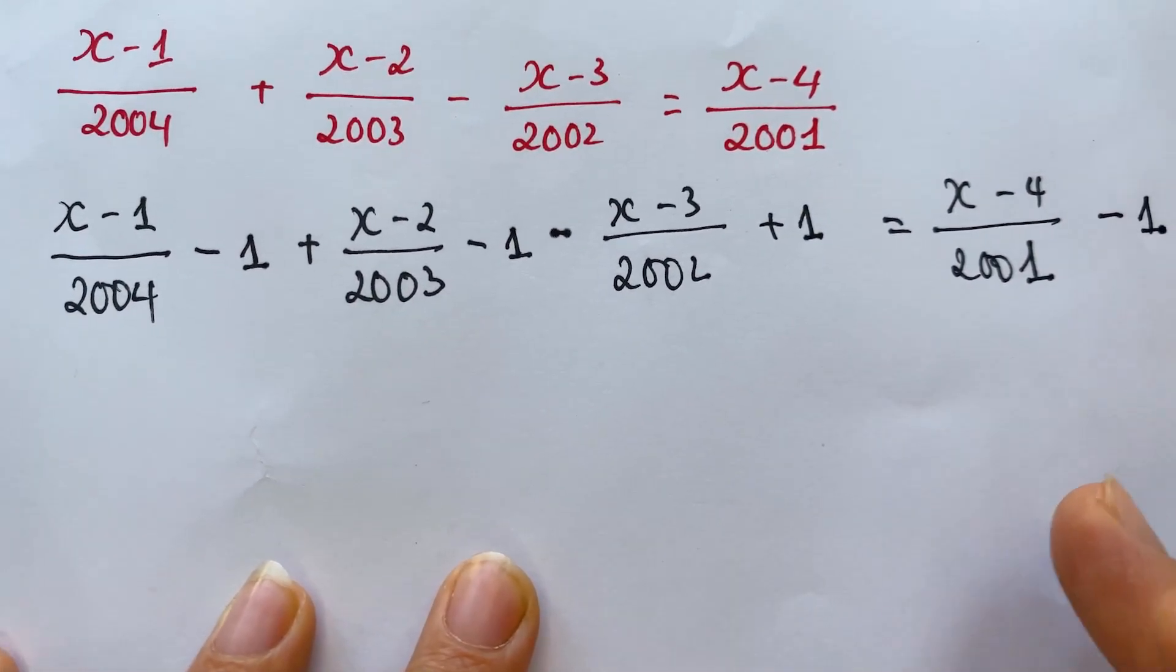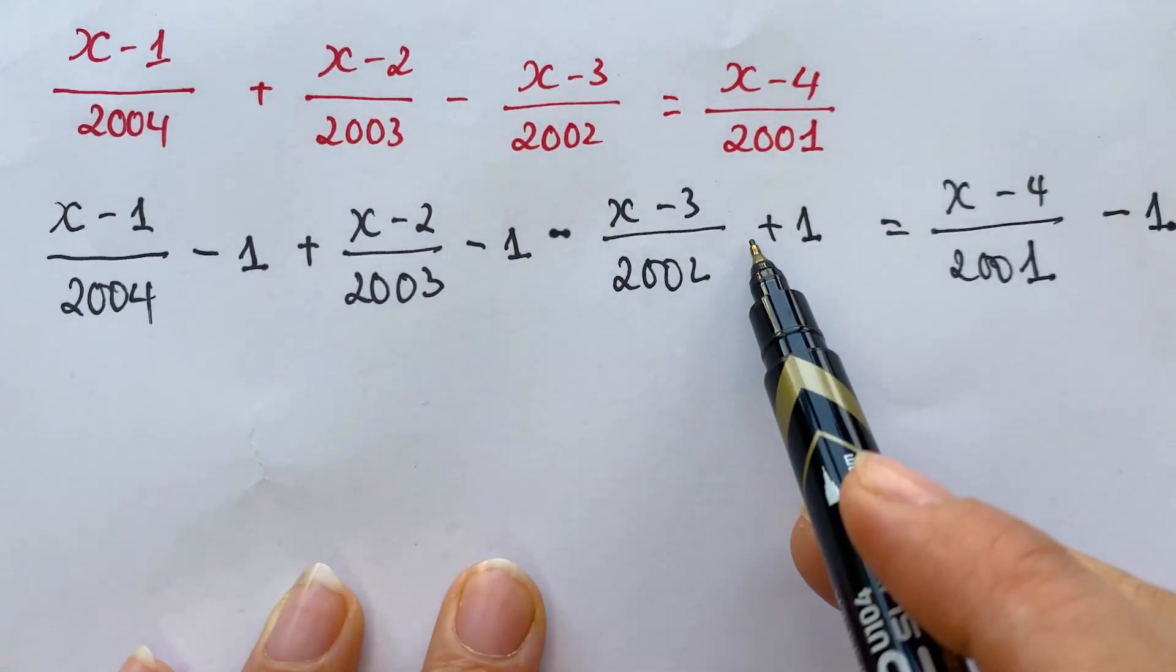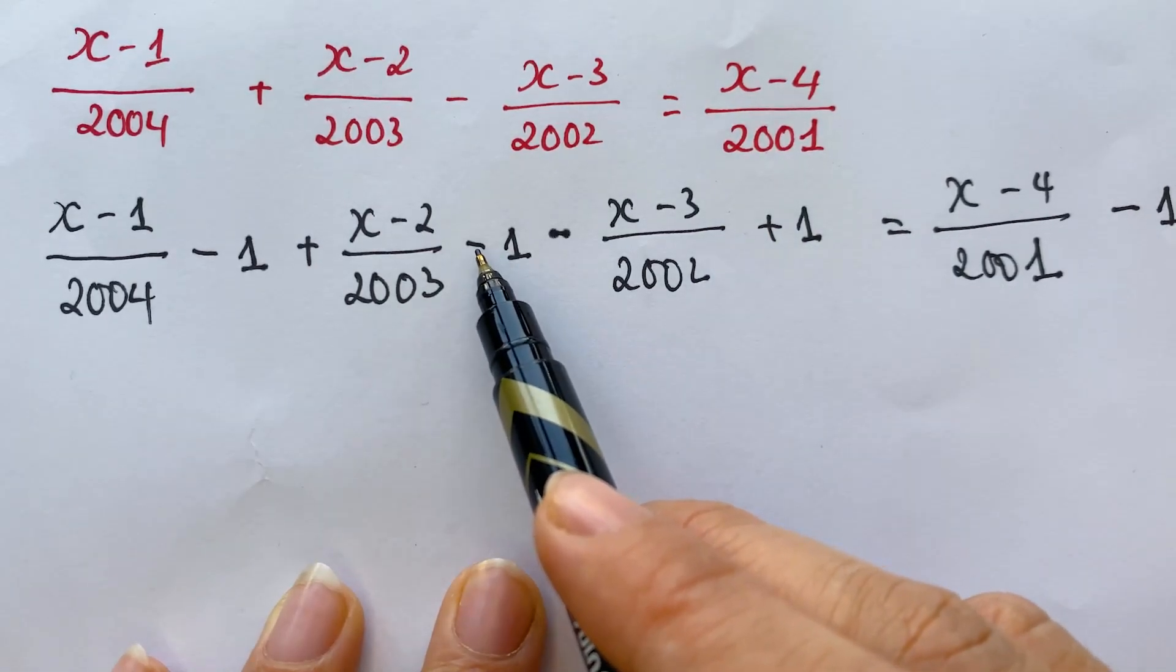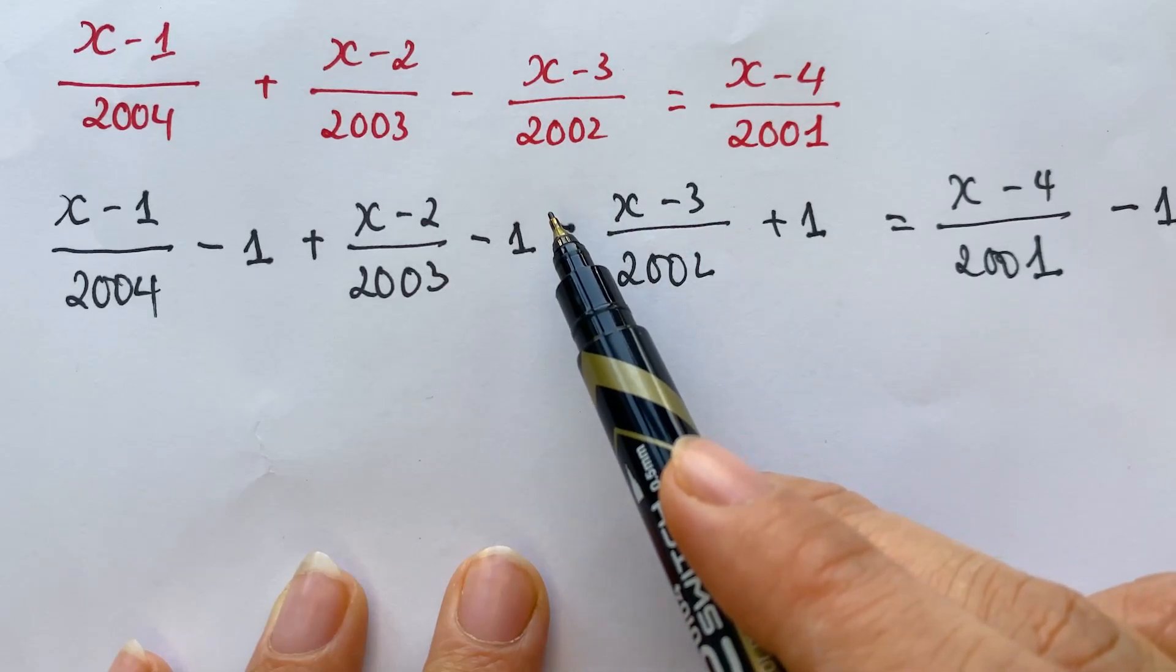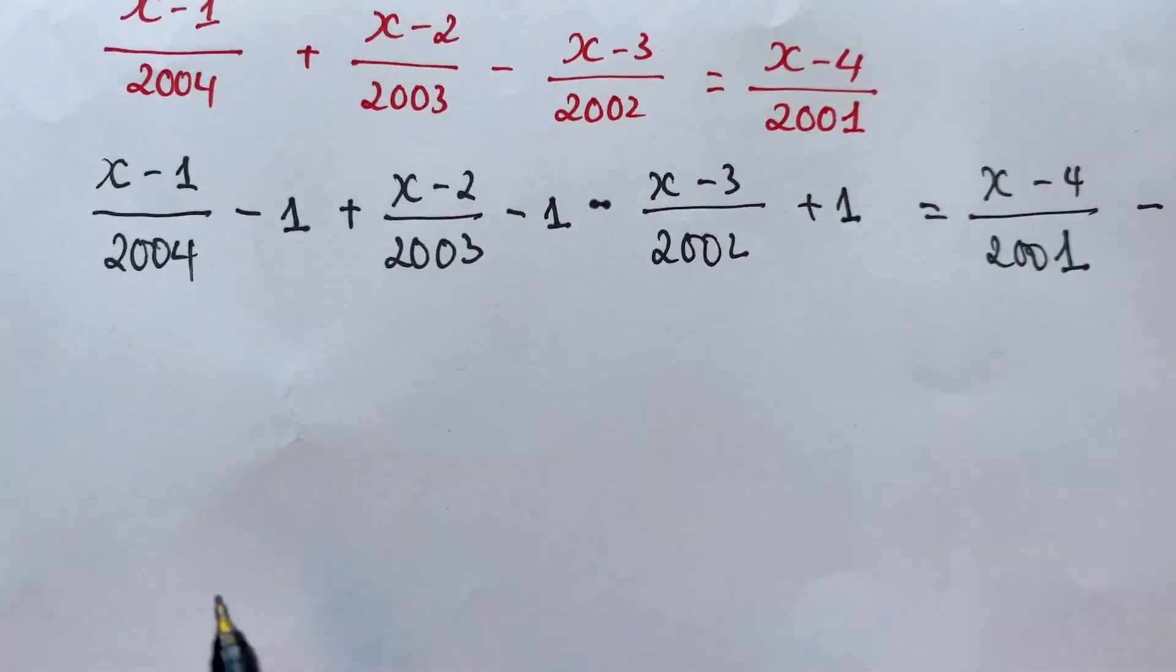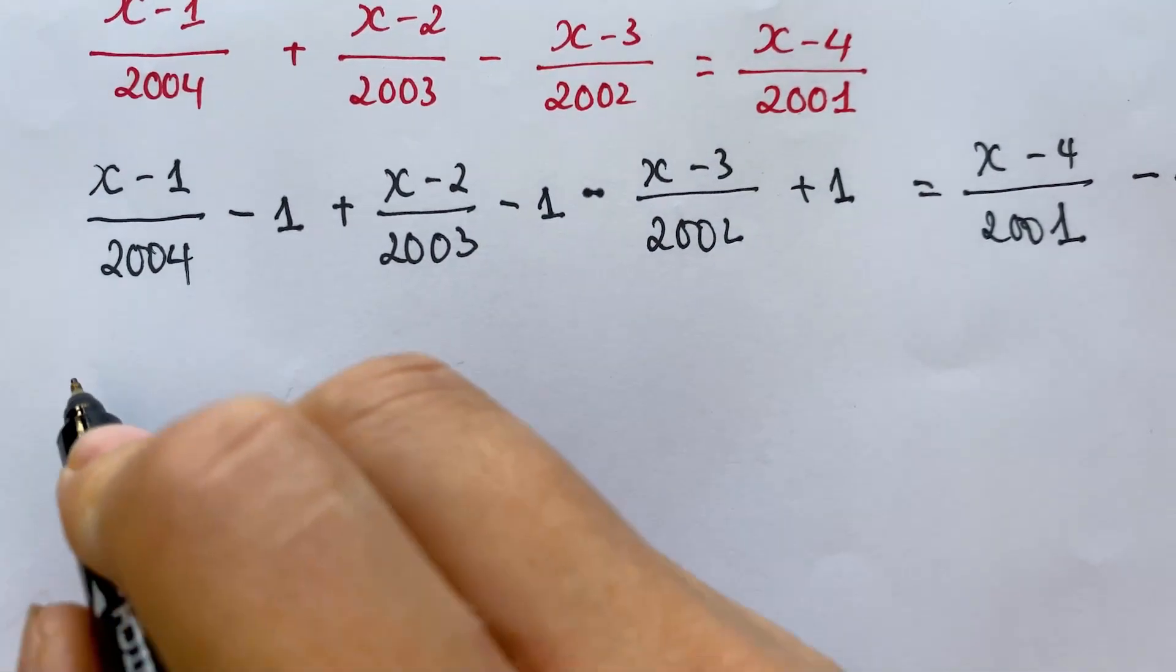Everyone see that? Minus plus equals 0, so we have minus 1 minus 1, right? Yes, minus both sides by 1.